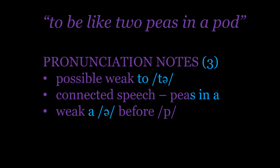Because of the 'p' at the beginning of the word 'pod', we soften off the vowel — it's a weak vowel: 'ə', 'peas in ə'. So to run that whole thing through one more time: 'tə be like two peas in ə pod'.